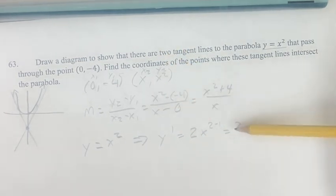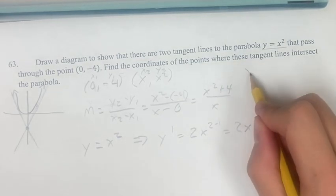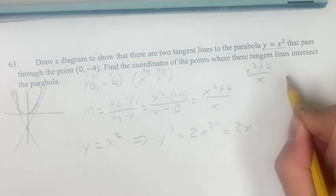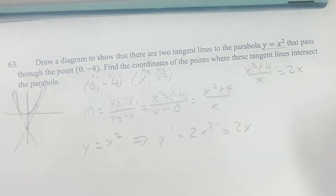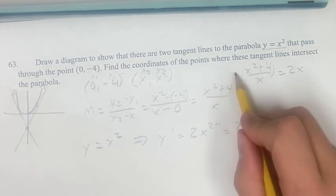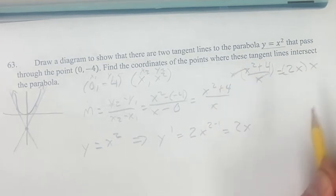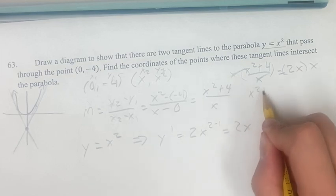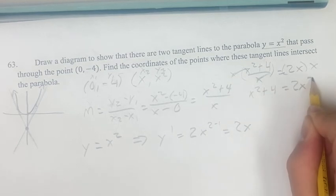We know that these two are equal because they're both representing the slope of the tangent line. If we set (x² + 4)/x equal to 2x, we can solve for x. Multiplying both sides by x, the denominator cancels out and we have x² + 4 equals 2x².